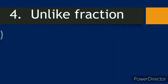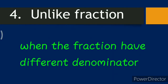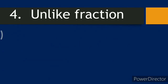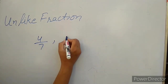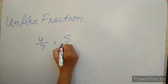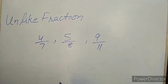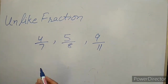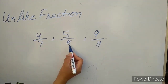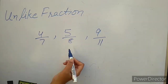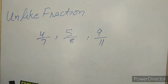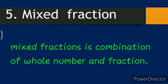Fourth: unlike fractions. When fractions have different denominators, those fractions are known as unlike fractions. For example, four over seven, five over eight, nine over eleven — these are all unlike fractions because their denominators are different.